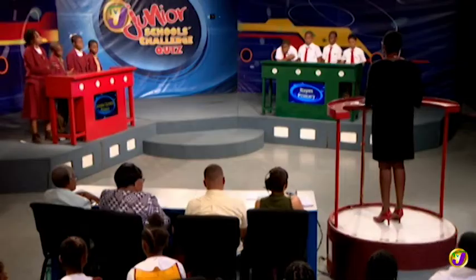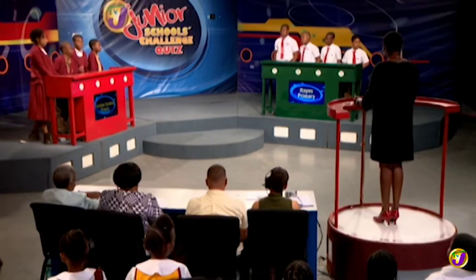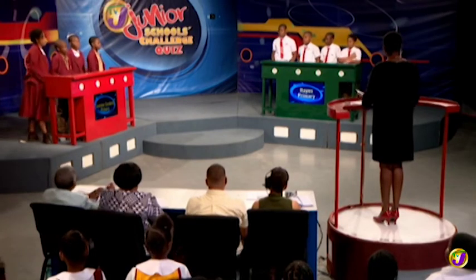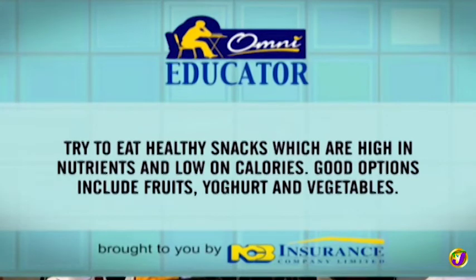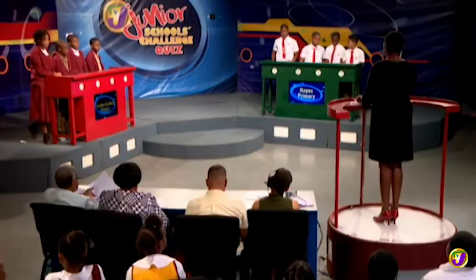That bell signifies the end of section one. It's Seaview Gardens Primary on six points, Hayes Primary on five points. Now, before we go to the break, here's a friendly tip for the kids from NCB Insurance: try to eat healthy snacks which are high in nutrients and low in calories. Good options include fruits, yogurt, and vegetables. Stay with us — the Junior Challenge face-off is up next.